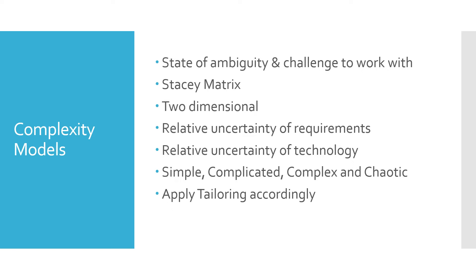The second complexity model is the Stacey Matrix. It is a two-dimensional matrix: one axis relates to uncertainty of requirements, the other to uncertainty of technology. If both are certain, it is simple. If requirements are unknown and technology is certain, it is complicated. If requirements are uncertain and technology is certain, it becomes complex. If both are uncertain, it is chaotic. Based on whether a situation is simple, complicated, complex, or chaotic, a project leader can apply tailored development approaches, risk models, and methods accordingly.